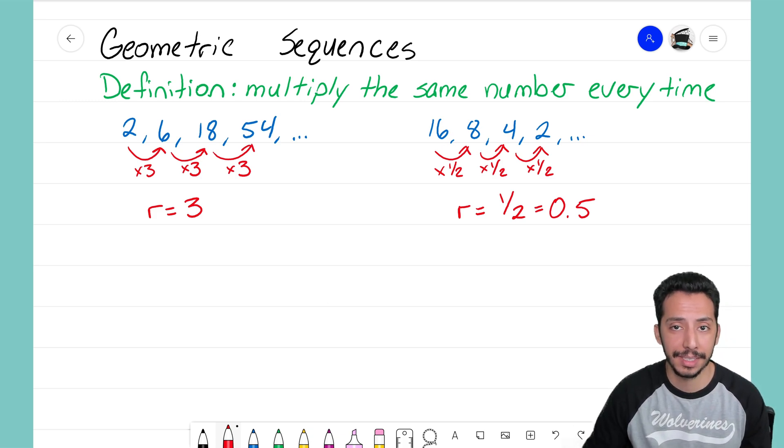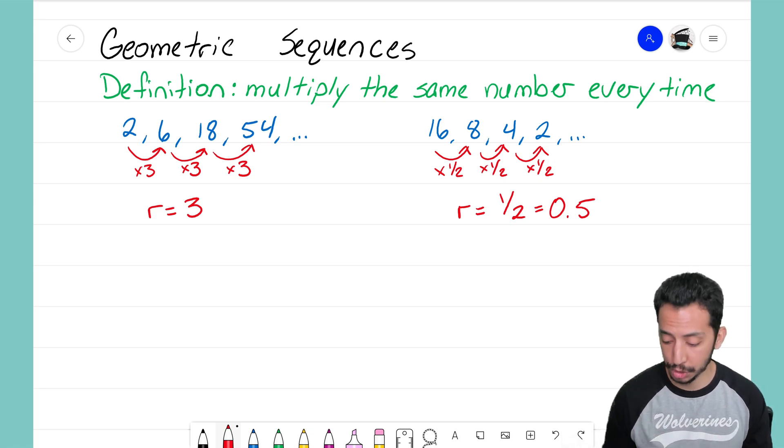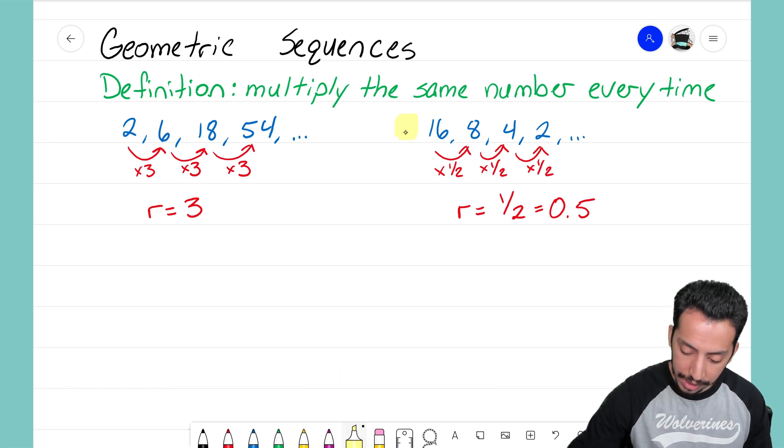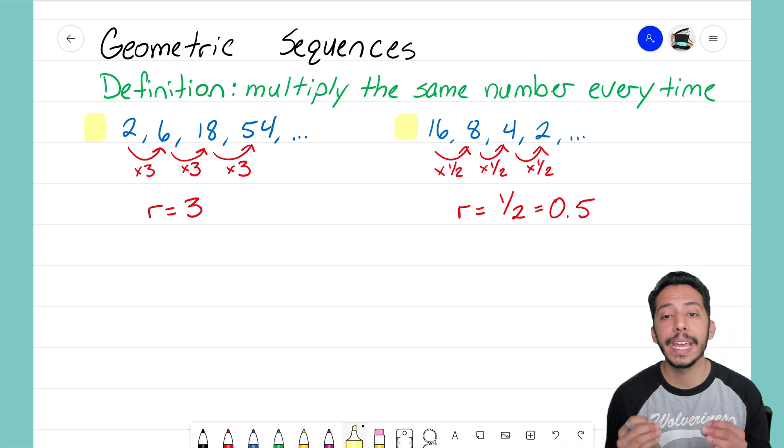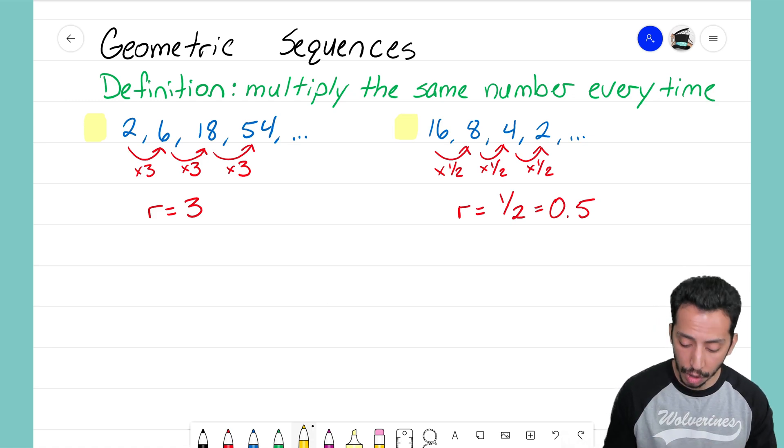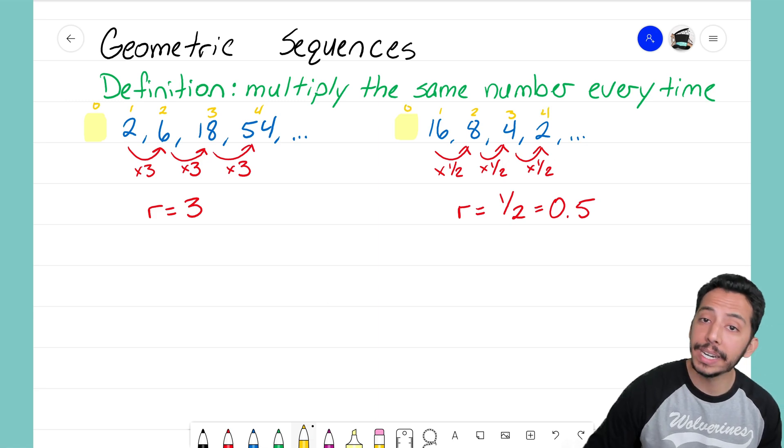But it's not. We have to make sure we're thinking in terms of what are we multiplying by - we're multiplying by one half. Just like with arithmetic sequences, the second component that's most important for us is that zero term. Remember, we're now thinking about what is that term that would come before the first term in both sequences.